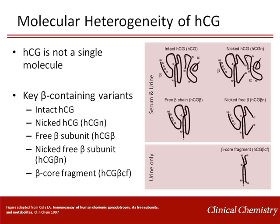Only the beta core fragment, the terminal degradation product of HCG, is unique to the urine, suggesting that it is produced by a metabolic process in the kidney.